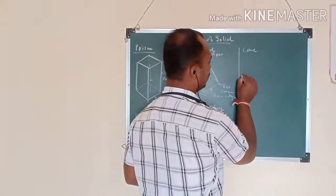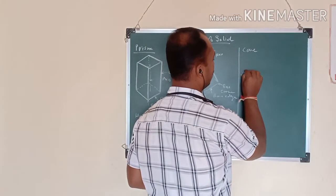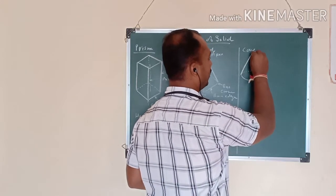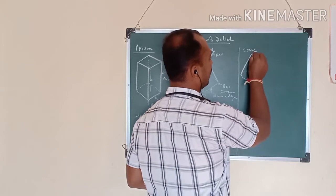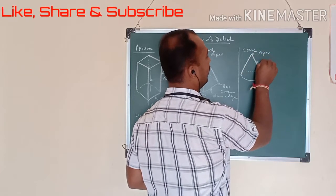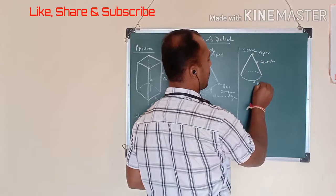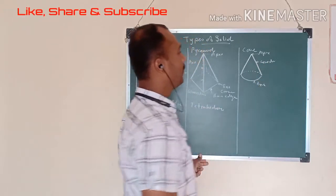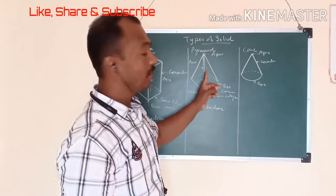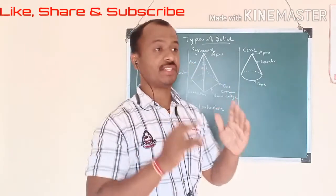The cone has a circular base — a circular face — and it has an apex. The base is joined to the apex. It has a generator and a base. These two solids — cone and cylinder — are known as solids of revolution.